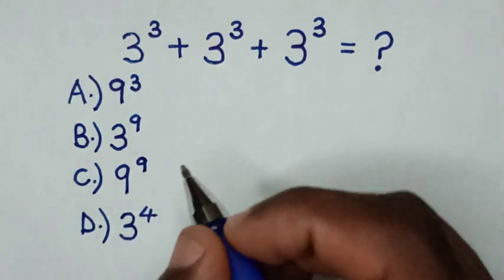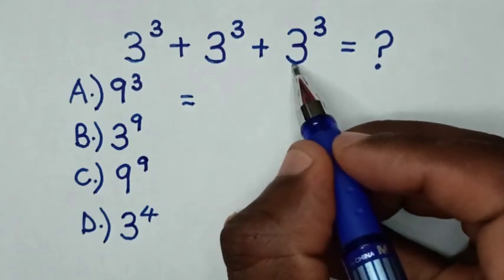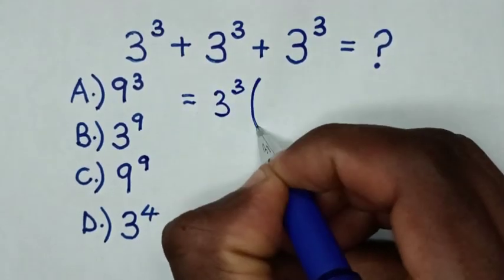So, from this addition of exponents, it will be equal to 3 power 3 is common. So we take 3 power 3 out of bracket.